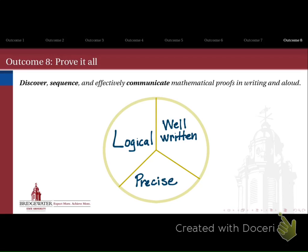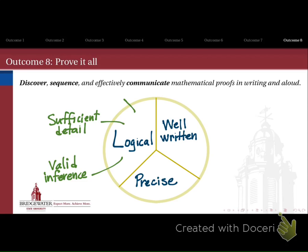A logical proof uses valid inference, a sufficient amount of detail but not too much — write just as much as you need to make the point, but no more — and each inference is valid, using quantifiers appropriately, so that A implies B really means A implies B. Precision in proofs has a lot to do with terminology: are you using the language of our subject accurately and appropriately? And are you using notation to convey the meaning of your arguments carefully and precisely, so that a reader is not left wondering what is going on?